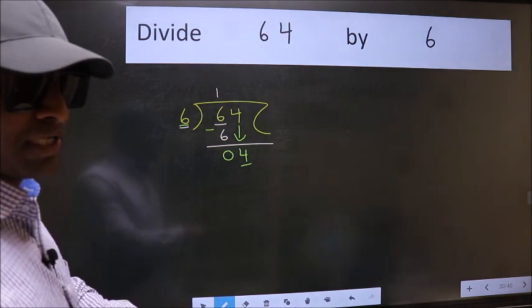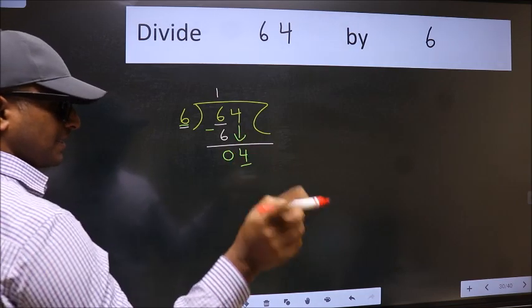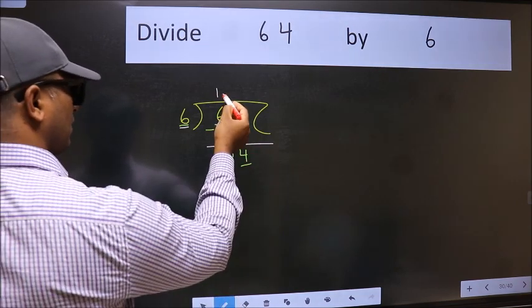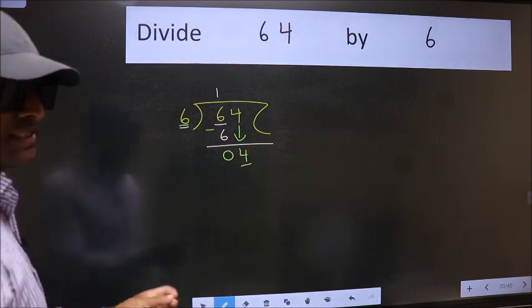So what many do is they directly put a dot, take 0, which is wrong. Why is it wrong? Because you just brought this number down, and in the same step, you want to put a dot and take 0, which is wrong.